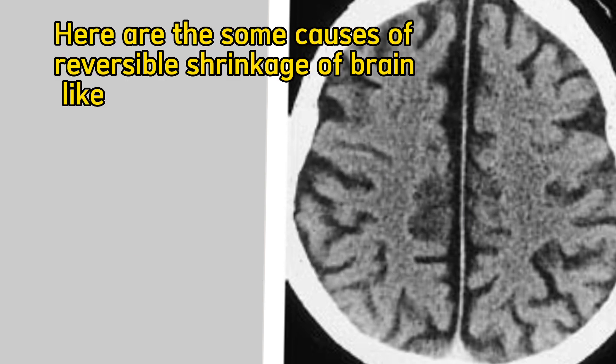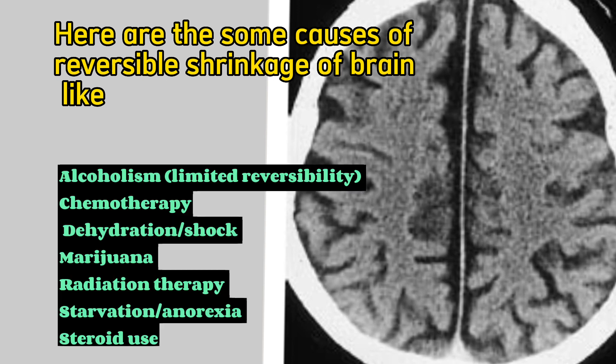Here are some causes of reversible shrinkage of brain: alcoholism, chemotherapy, dehydration and shock, marijuana, radiation therapy, starvation and anorexia, and steroid use. Note that alcoholism usually shows only limited reversibility.